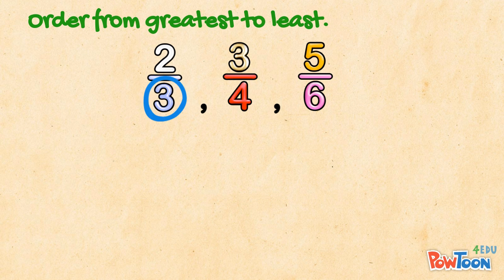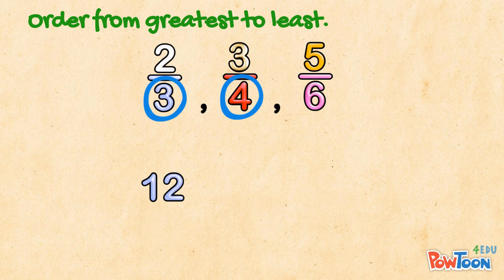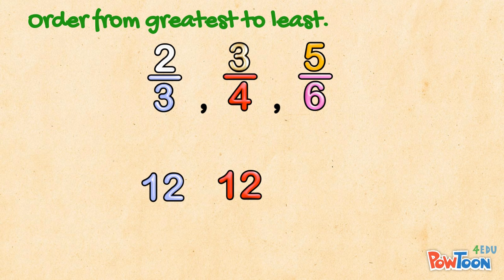If I multiply 3 by 4, I get 12. And 6 is a factor of 12. 12 is therefore the lowest common denominator I can make. Watch this.